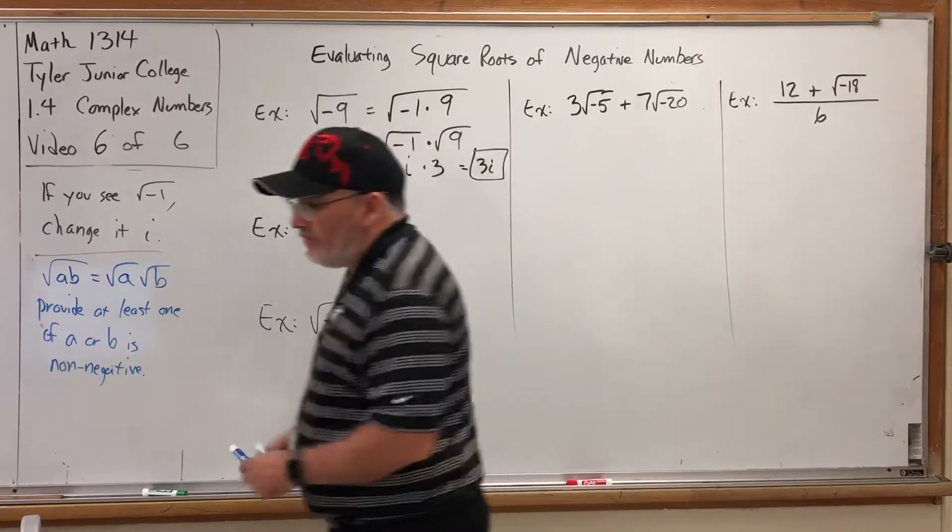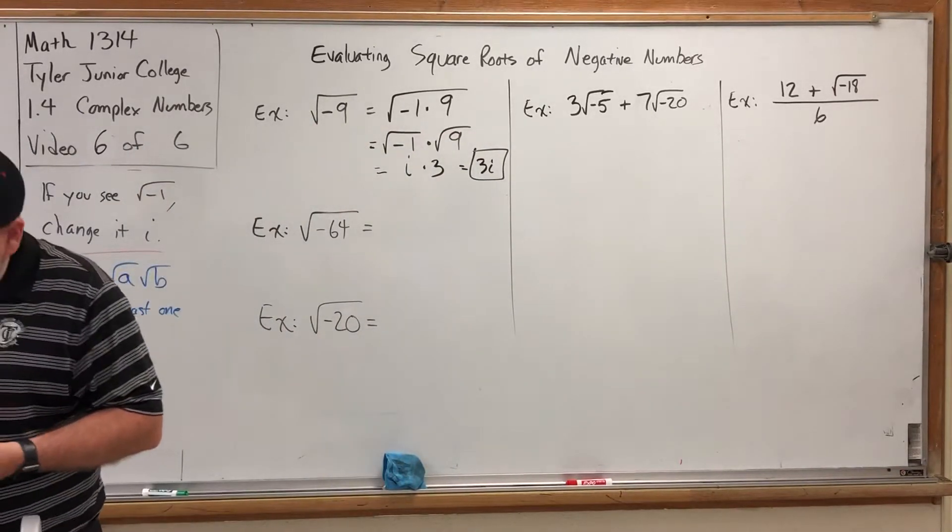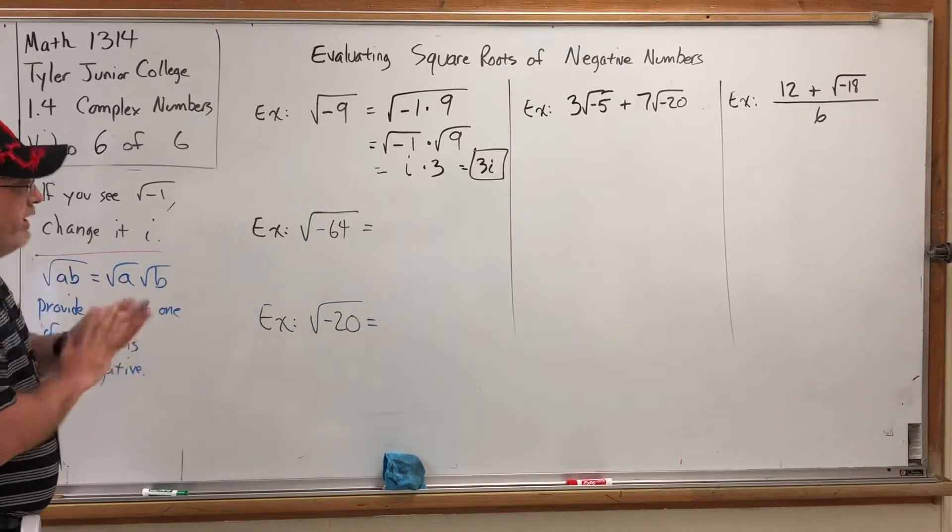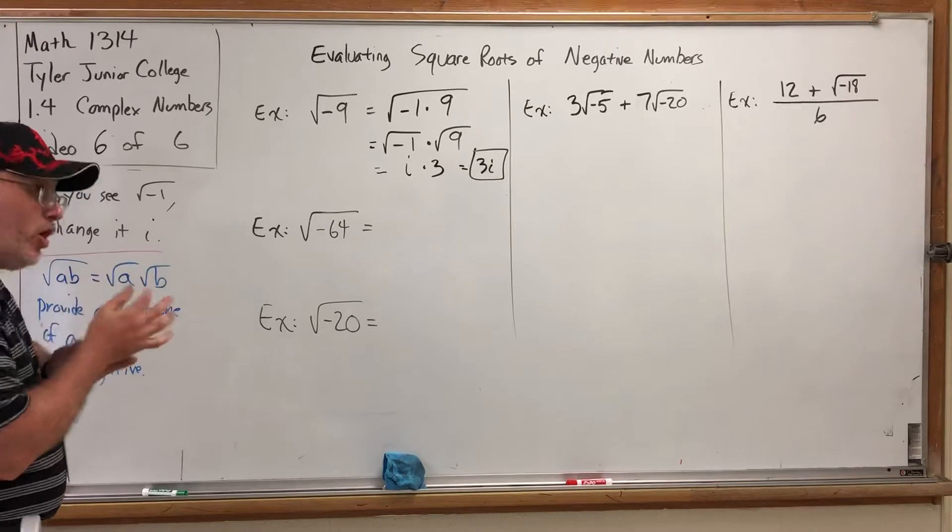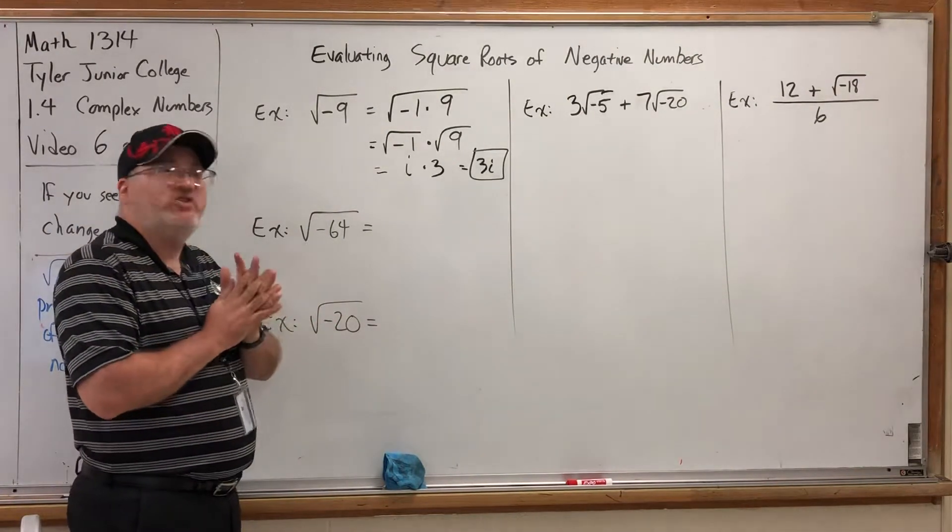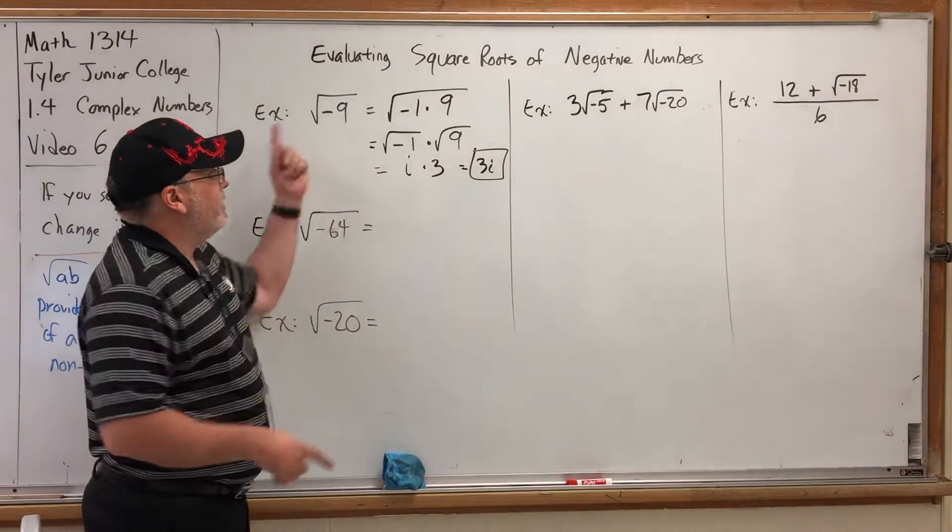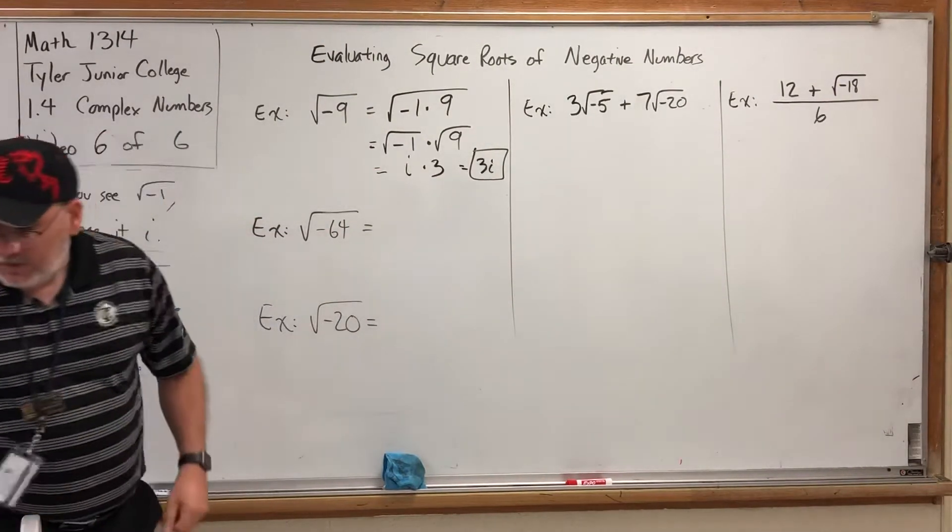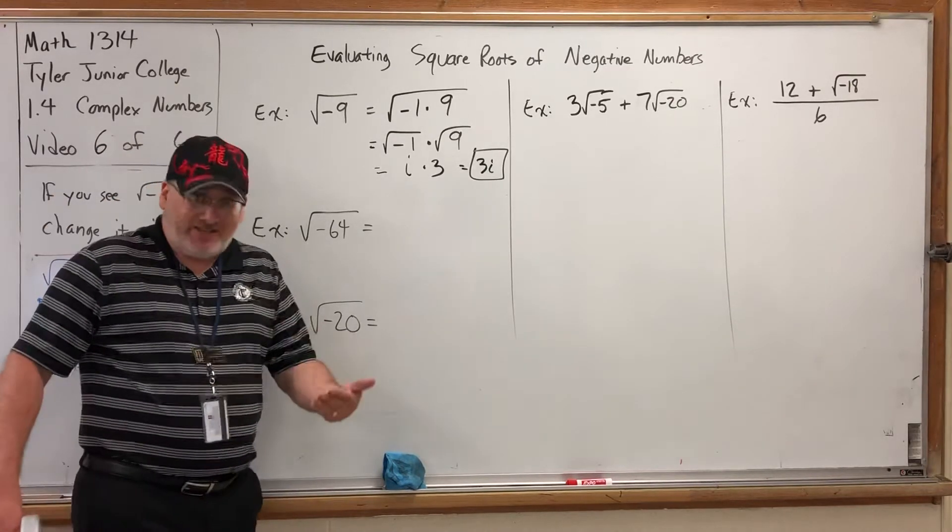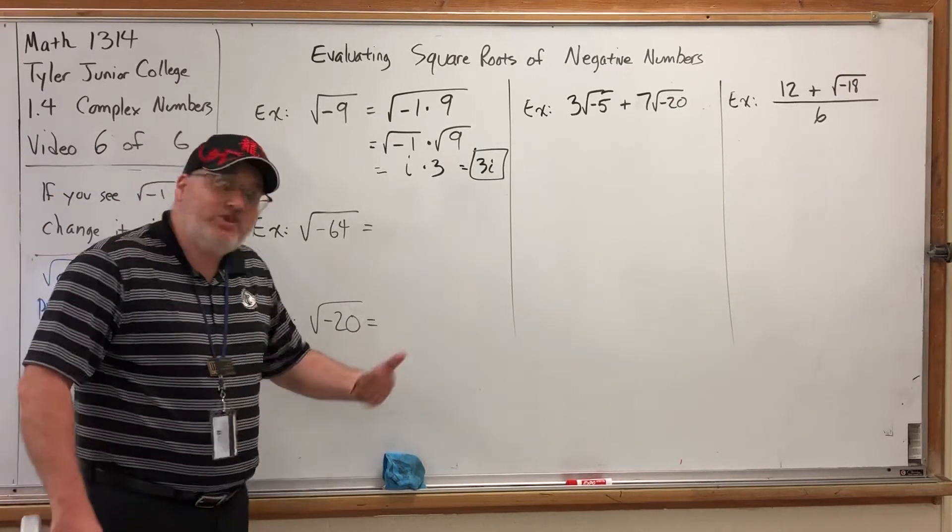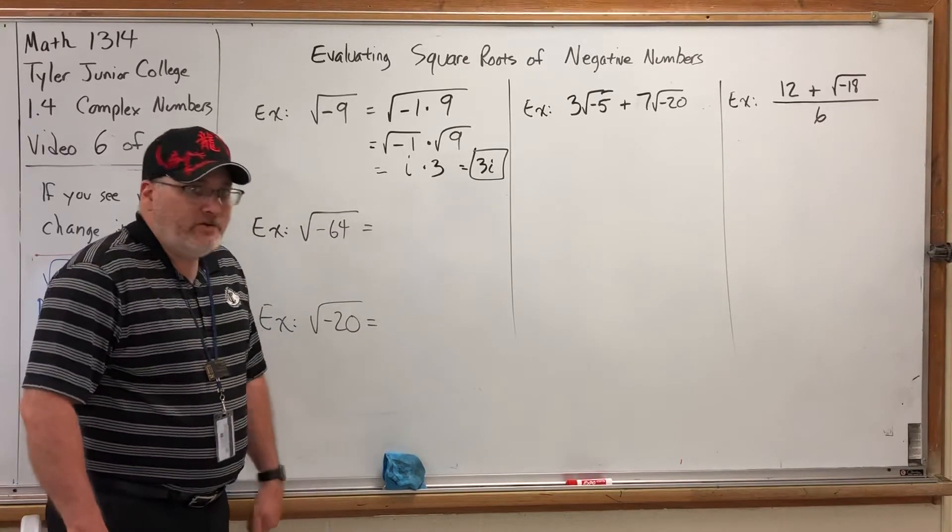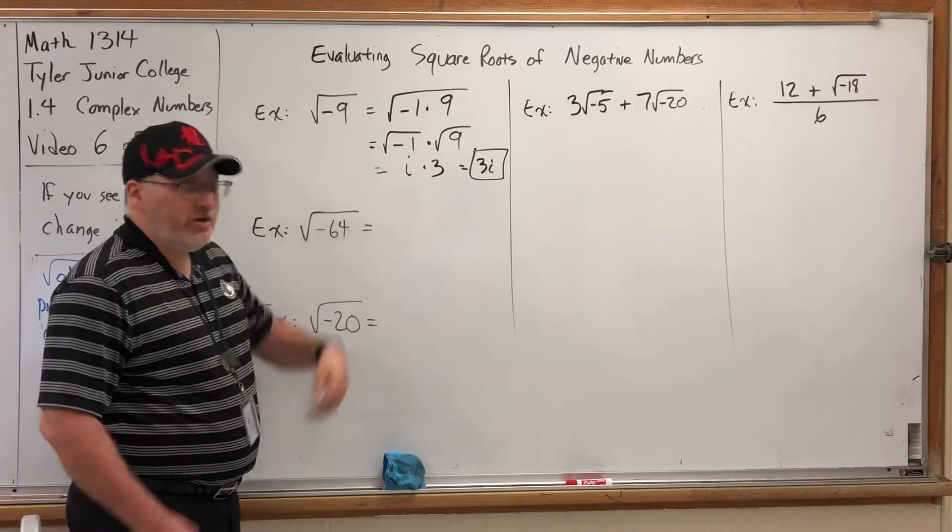Now, you might have already known that the square root of negative 9 was 3i by just saying, well, I'll just take the square root and stick an i on it. And you wouldn't be wrong. If you square root a negative number, you can just square root the positive number and stick an i on it. Why? Because I can always play this game. So I expect you to be able to square root negative numbers almost instantly by asking yourself, what would the answer be if it didn't have a negative? Write that down, and then stick an i on it because of the square root of negative 1.